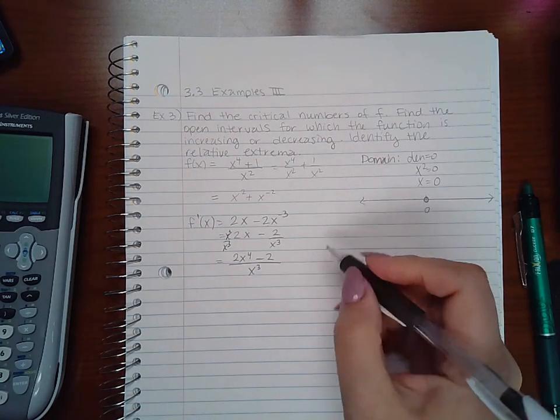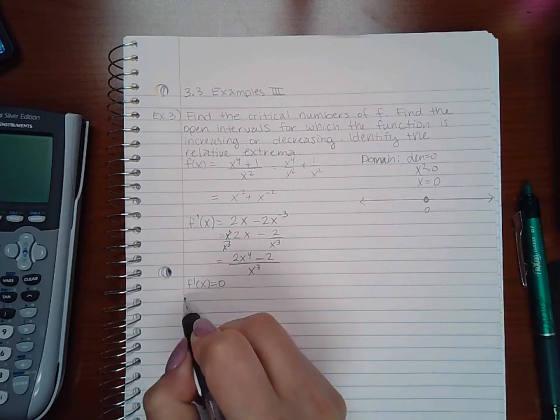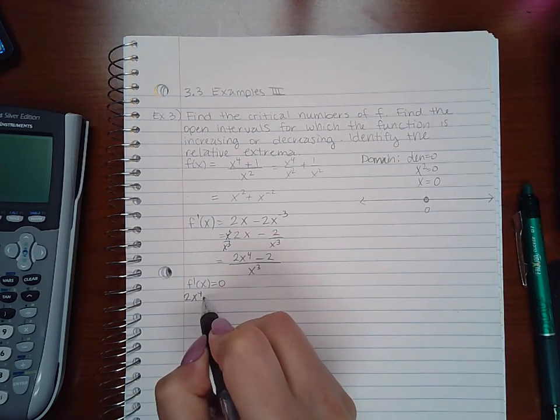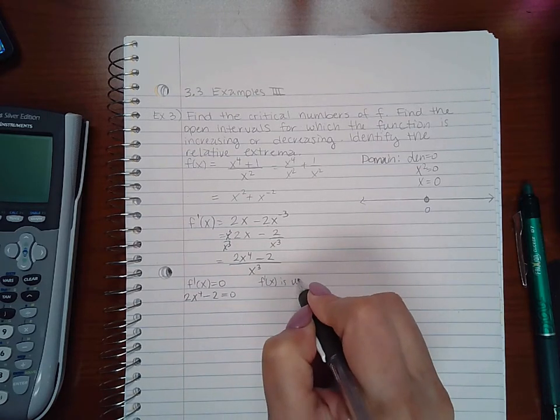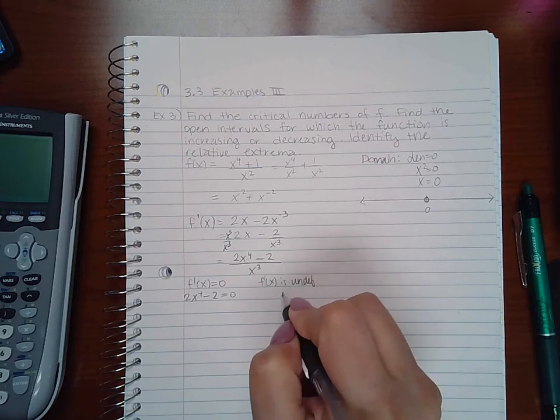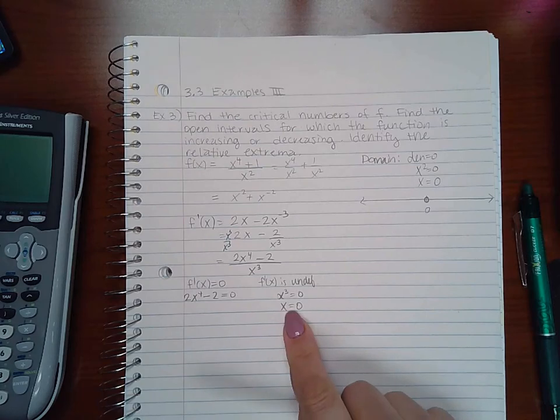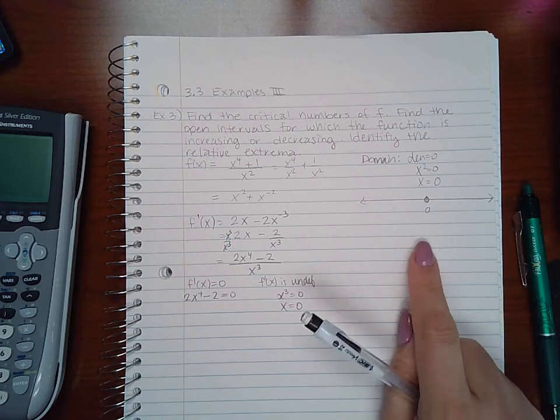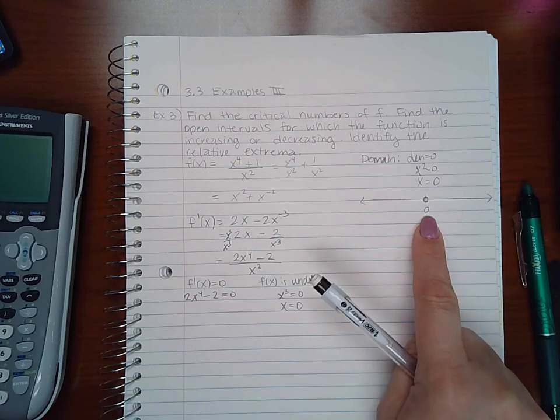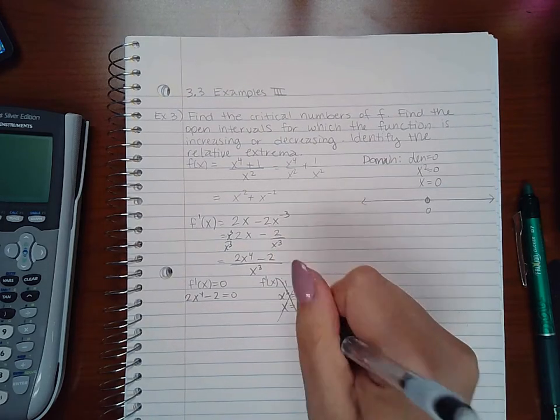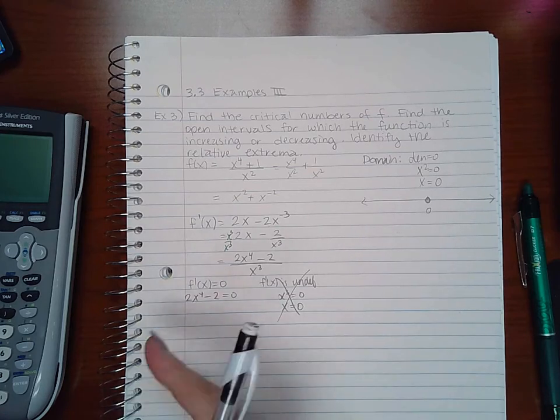f prime of x equals zero when 2x to the fourth minus 2 equals zero. f prime of x is undefined when the denominator equals zero, which gives x equals zero. But x equals zero is not a critical number because it's not in the domain. So we get no critical numbers from the undefined case.